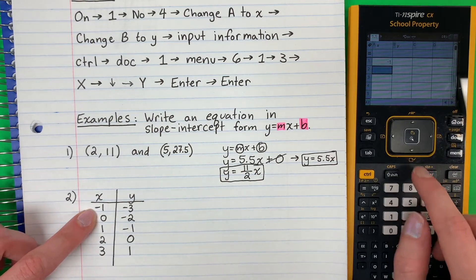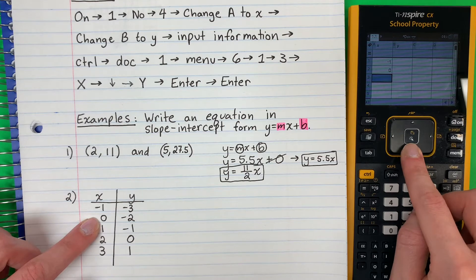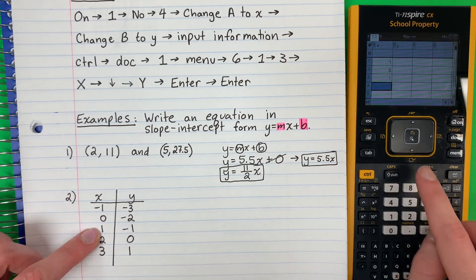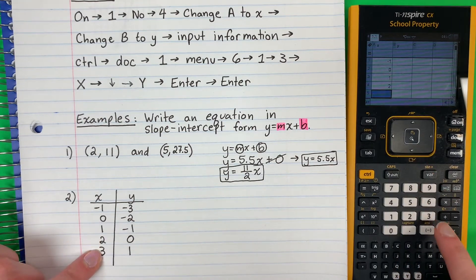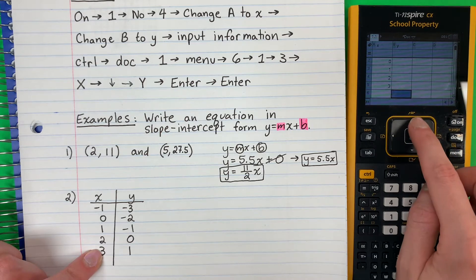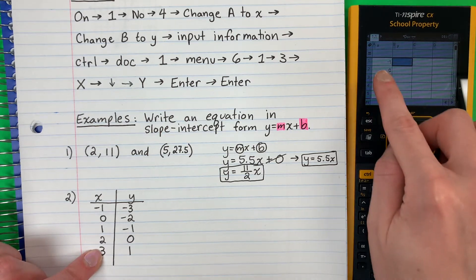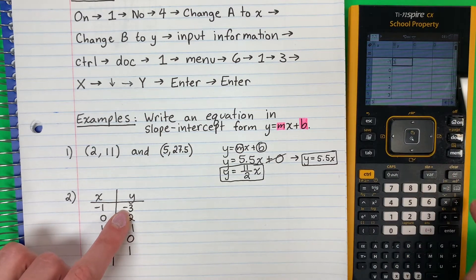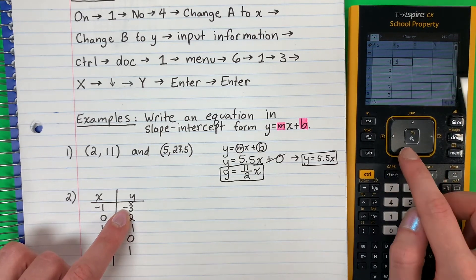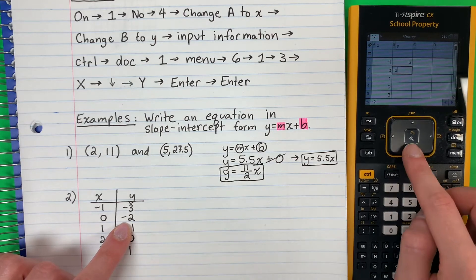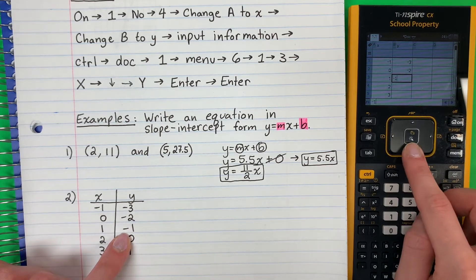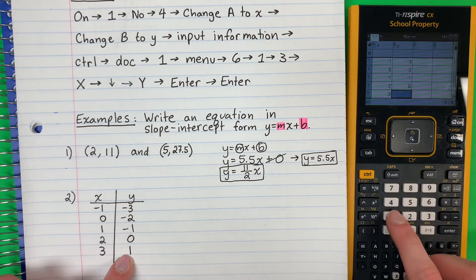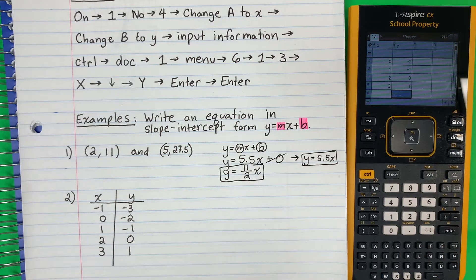So negative 1, down, 0, down, 1, down, 2, down, 3, down. Go all the way up. Make sure they're next to each other. So negative 1, back to the first one. Negative 3, down, negative 2, down, negative 1, down, 0, down, 1, down. Should be like that.